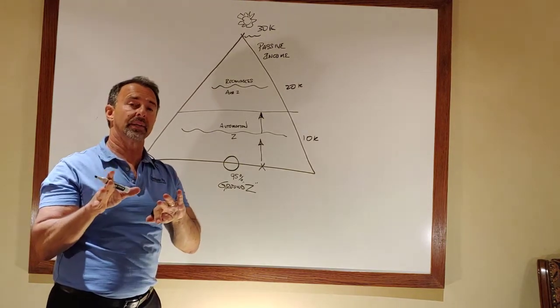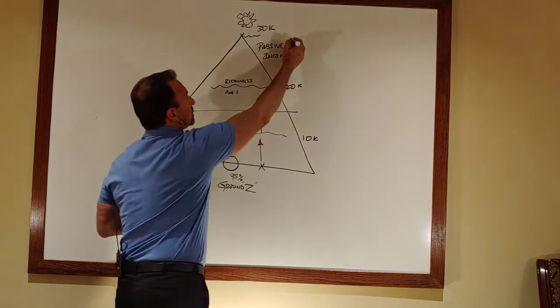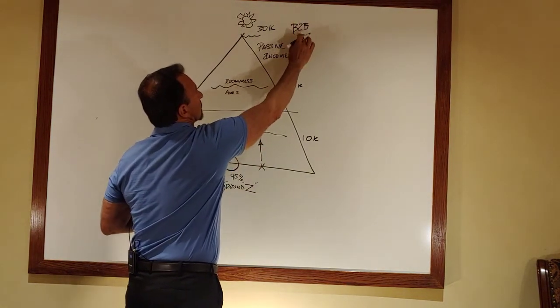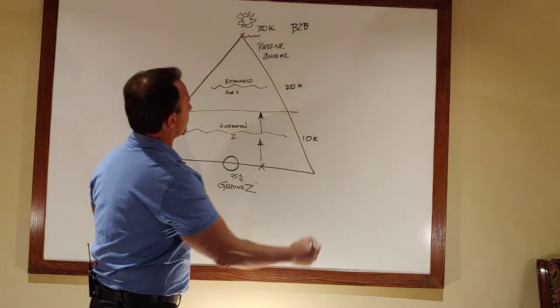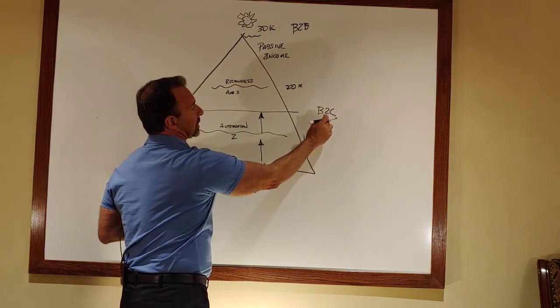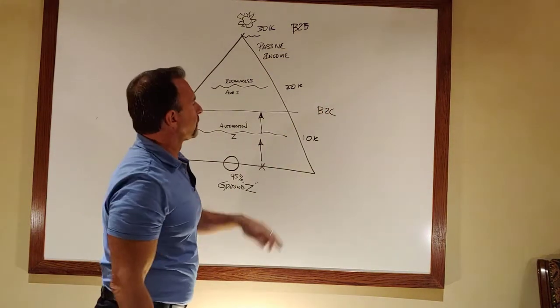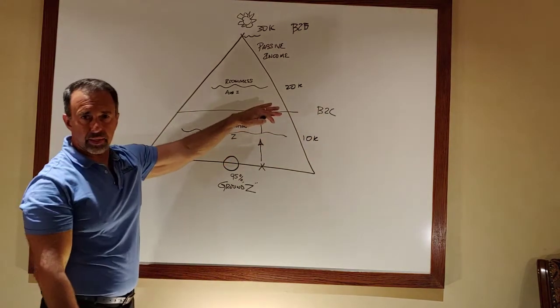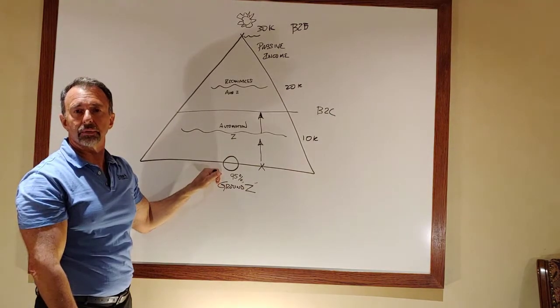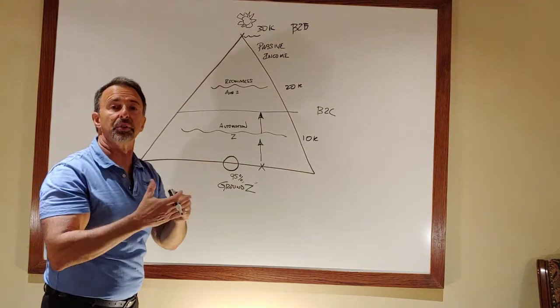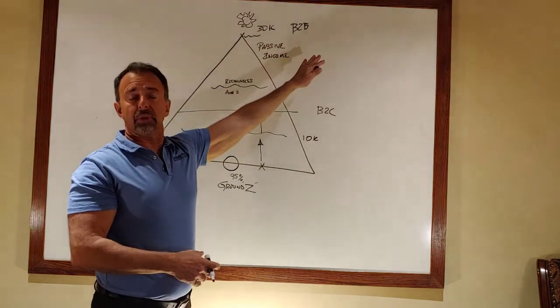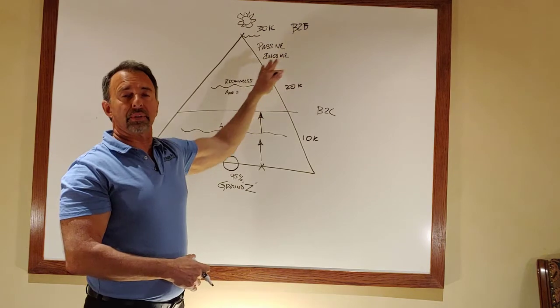That's why selling the B2B model business-to-business is much more powerful than if you were to sell a B2C model. Business-to-consumer. Business-to-consumer has a way of pulling you down. It wants to keep you down closer to ground zero because you're dealing direct with the consumer. Here, you're not. You're shielded because you're only dealing with the reseller.